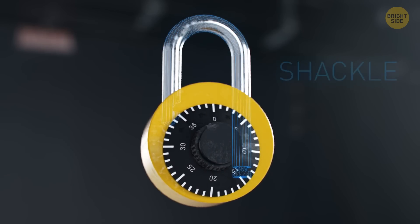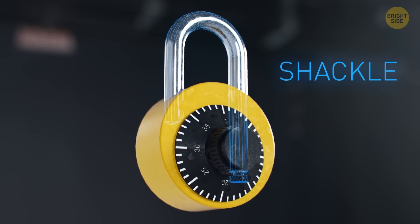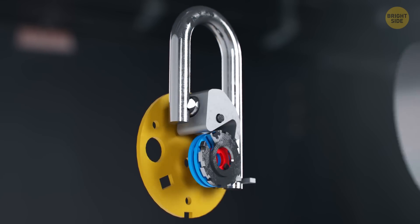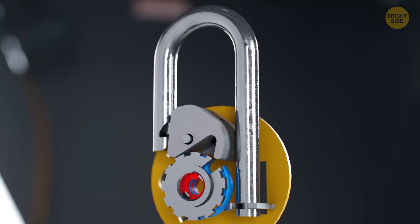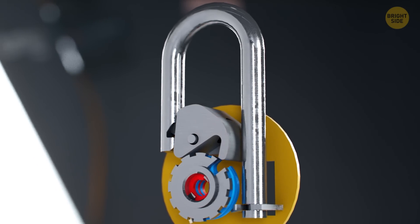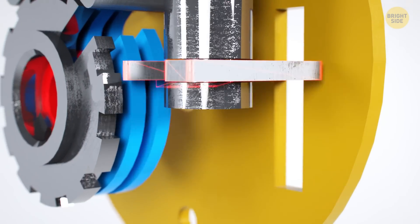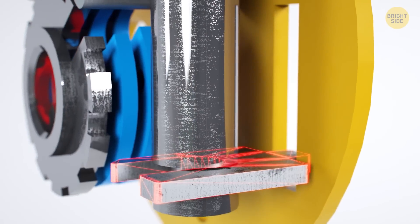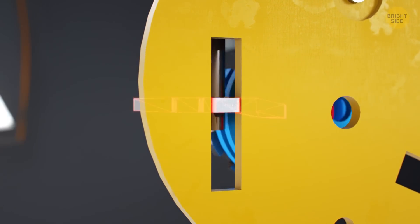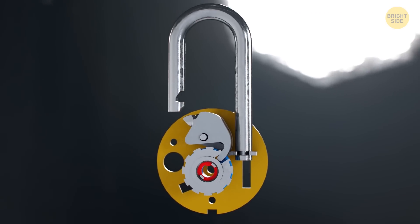The part that opens and closes the lock is this curved metal stick called a shackle. One end is longer than the other, and it cannot be taken out of the case. The shackle collar is attached to its tip and follows the shackle as it moves. When the lock is opened, the collar rests on the upper stopper and doesn't allow the shackle to be pulled out of the case.